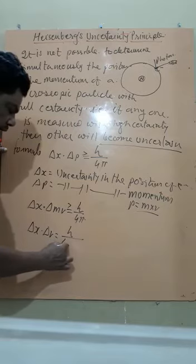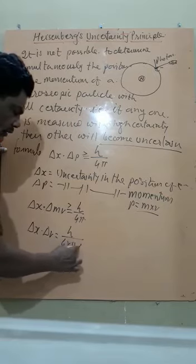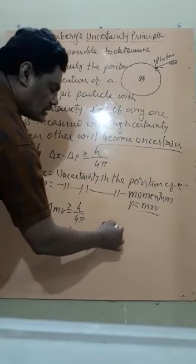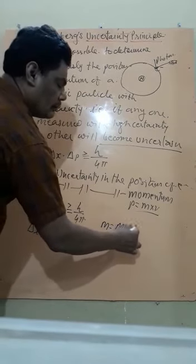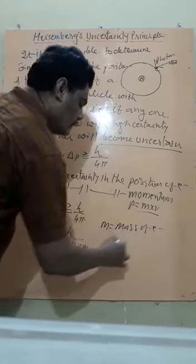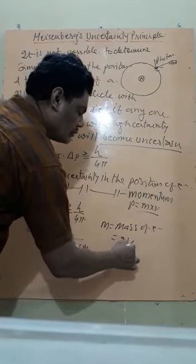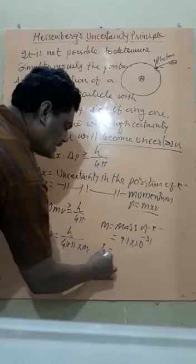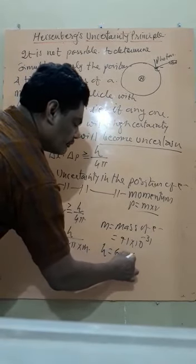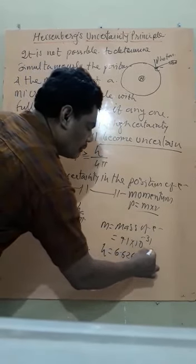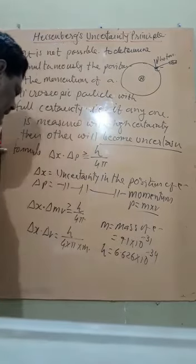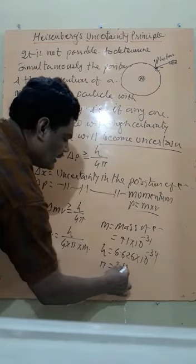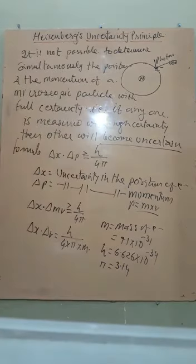Or you can write del X into del V is equal to h upon 4 into π into M. Here M is mass of electron, mass of electron which is 9.1 into 10 to power minus 31. What is h? This Planck's constant 6.626 into 10 to power minus 34 joule second and what is the meaning of π you can place here 3.14.